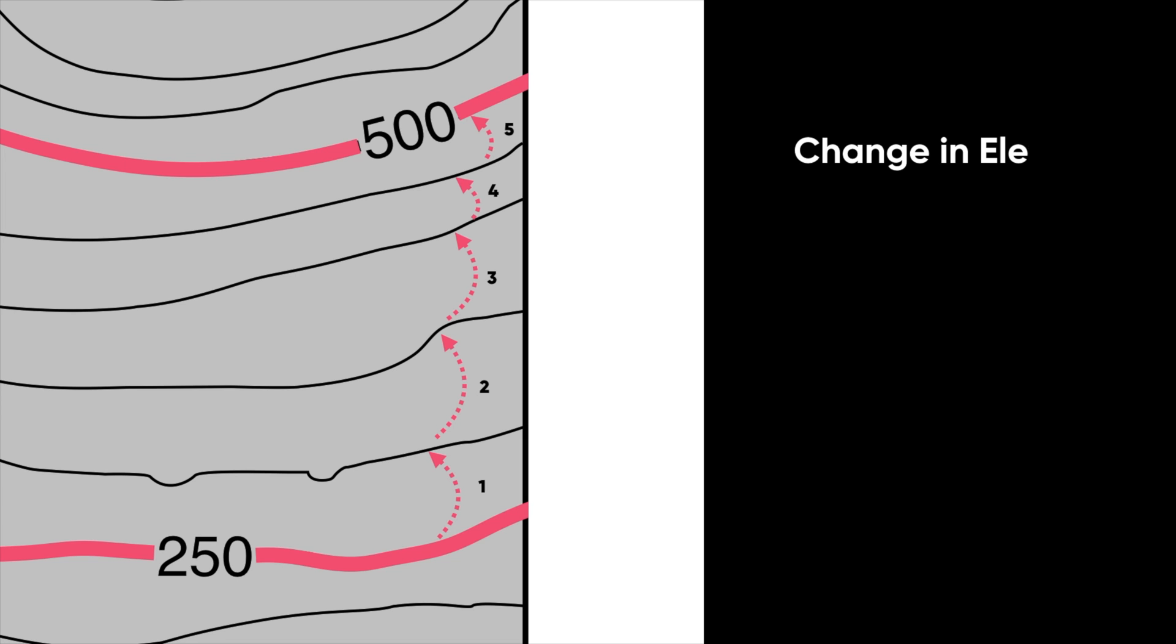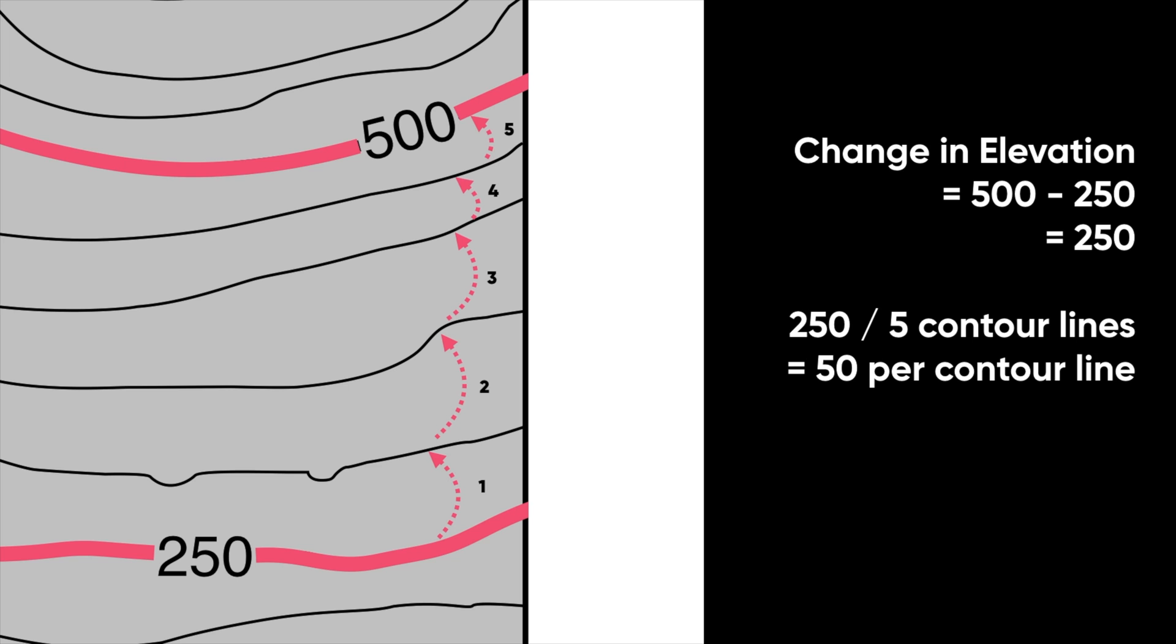Now let's do a little bit of simple math. So my change in elevation here is equal to 500 minus 250. Because I know that when I'm walking from one index contour to the next here, I'm going from 500 down to 250 or 250 up to 500. So I know that that difference is 250. So between these two lines, the elevation changes by 250. Now I also know that there have been five contour lines here. There are five contour lines difference between them. And so if I divide that 250 change in elevation by the five contour lines, I get 50 per contour line. And so that means that my contour interval on this map is 50.